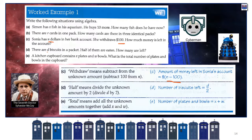There are D biscuits in a packet and half of them are eaten. How do we halve D? D divided by 2, or D over 2 — same thing. A kitchen cupboard contains X plates and W bowls. What's the total number of plates and bowls? We'd add them together: X plates plus W bowls. The number of plates and bowls equals X plus W.